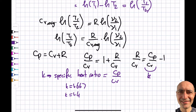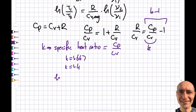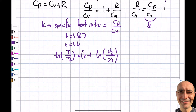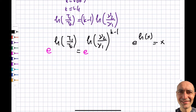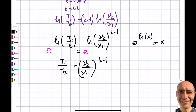The R/cv term becomes k minus 1, so we get ln(T1/T2) equals (k−1) times ln(v2/v1). Moving k−1 as a power: ln(T1/T2) equals ln[(v2/v1)^(k−1)]. Taking e to the power of both sides and using the identity e^(ln x) = x, the first isentropic relationship is: T1/T2 = (v2/v1)^(k−1).